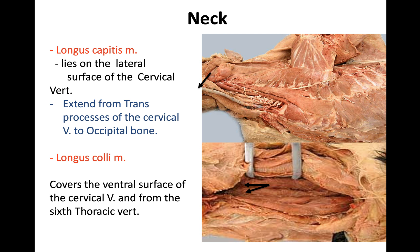We'll start in the neck region. The first muscle is the longissimus capitis, which lies in the lateral area of the cervical region. You can see this muscle here in the neck region — it extends from the transverse processes of the cervical vertebra toward the occipital bone, toward the head. That is why we call it the longissimus capitis.